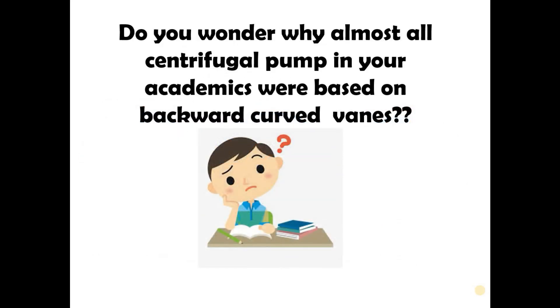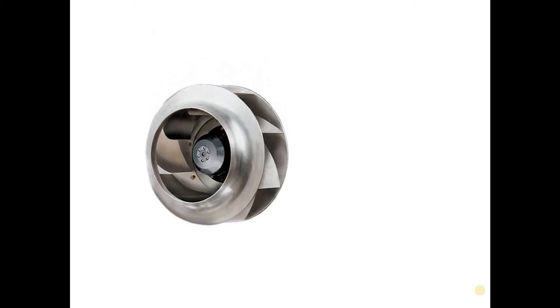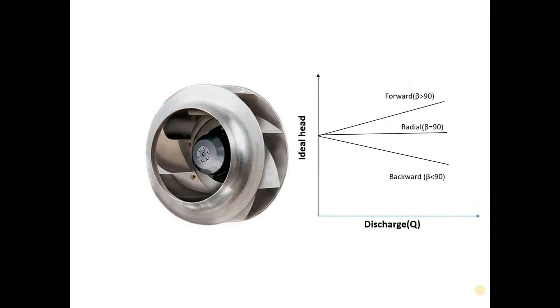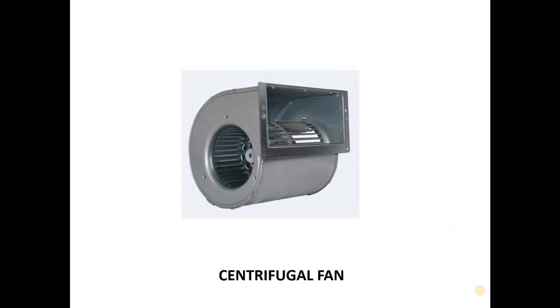Have you ever wondered why all the numericals in your academics were based on backward curved vanes? Backward curved vanes are the most popularly used impellers because there is no stall point on the characteristic curve — meaning there is no point on the curve at which the pump cannot be operated. Forward vanes are used when the fluid concerned is air, as in centrifugal fans.